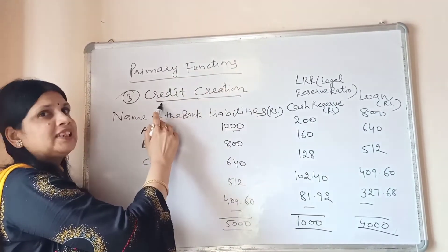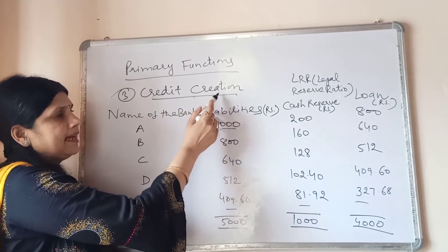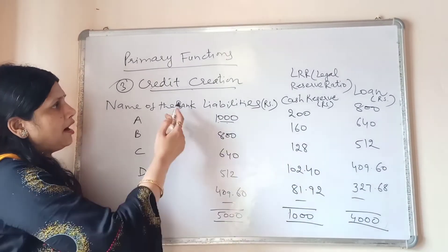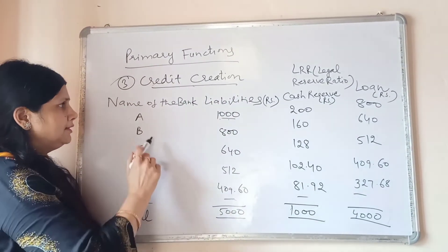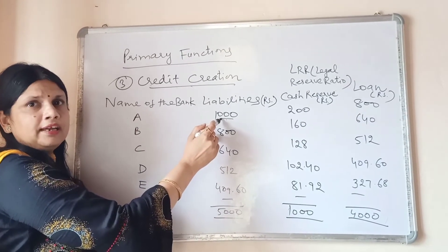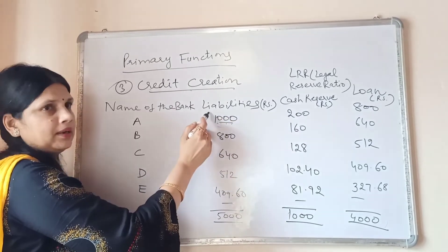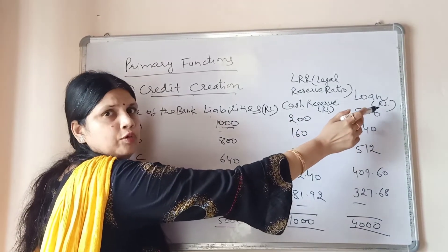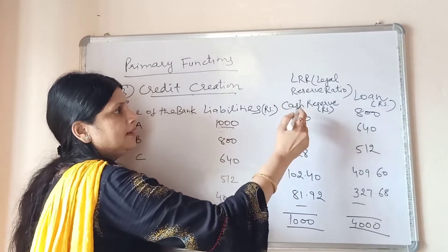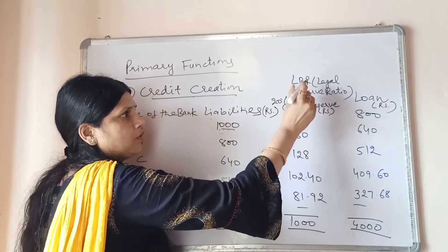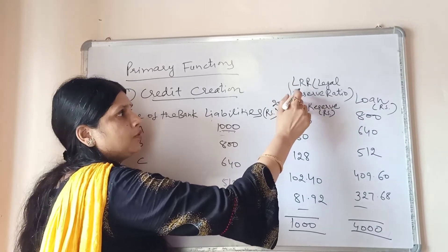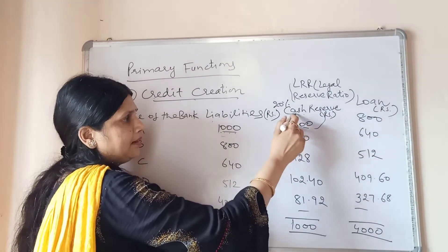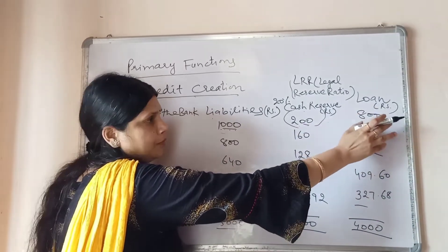The third primary function is credit creation. A person deposits 1,000 rupees in the bank. The bank's policy is to keep some amount as a cash reserve and lend the rest as a loan. Assuming the cash reserve ratio — also called the legal reserve ratio (LRR) — is 20%, the bank keeps 200 rupees and lends 800 rupees as a loan to another person.